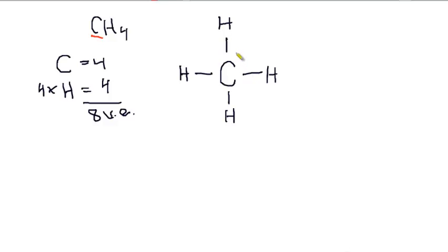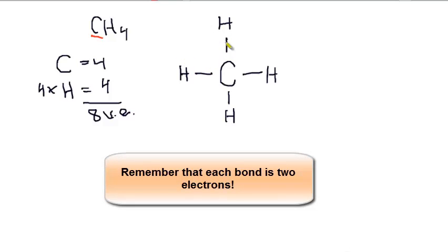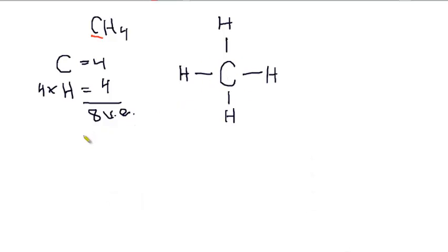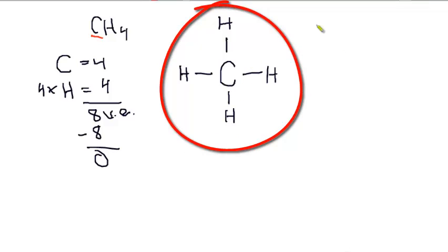Step three: I need to subtract all of the electrons that I just used to make this structure from my total. I used two for this bond here, two for this bond, two for this bond, and two for this bond. I've used eight electrons to build my skeleton. So when I subtract eight from eight, I have zero electrons left to place, which means this is my final structure.